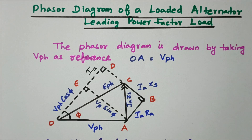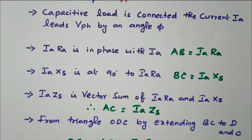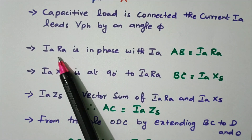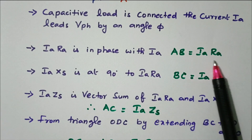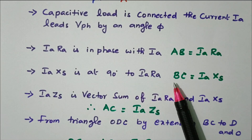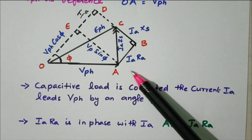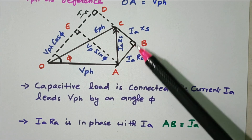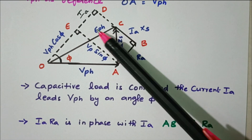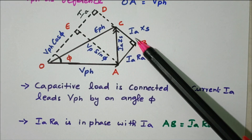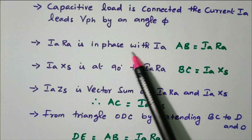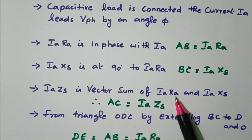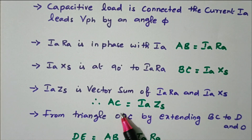Now we will see the description of what we discussed. A capacitive load is connected, so the current IA leads V_phase by an angle φ — current is leading. IA·RA is in phase with IA; AB equals IA·RA. IA·XS is at 90 degrees to IA·RA; BC equals IA·XS. IA·ZS is the vector sum of IA·RA and IA·XS, given by AC. The triangle is then extended — BC extended to D and O — giving us triangle ODC.